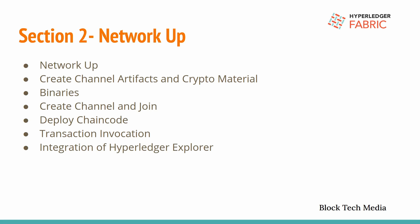Once the transaction invocation is done, we will integrate the Hyperledger Explorer, which is a visual representation of whatever we are doing in the network — invoking transactions, how many transactions there are, how many blocks there are, how many peers there are in the network, how many channels there are for a particular peer. We can see all these things in a visual way so that we can understand everything easily.